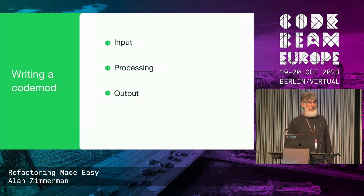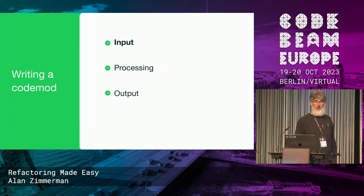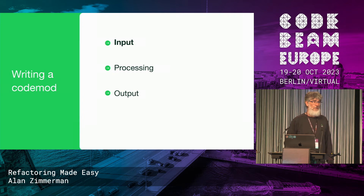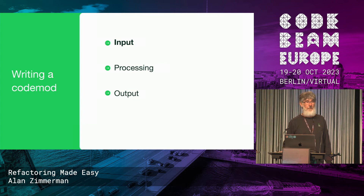When you write a refactor or a code mod, there are three concerns. The first — not always what you think about — is input. When you are wanting to change code, you have to do it in a context. You have to know which files are included, what are the compile options, what dependencies have been used, how it is put together, what build system was used. There are a whole lot of bits and pieces that make just having a known context for your compile a challenge. Don't forget a refactor has to work with code that compiles cleanly. Just to get it so that you are compiling the code that you think you are, so that you can make changes to it, is fairly challenging.